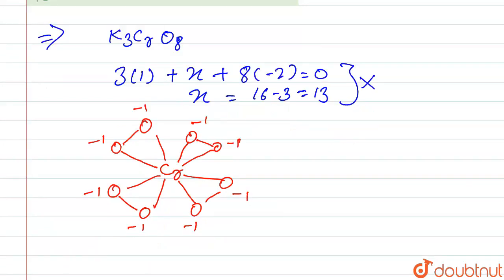So K₃CrO₈, now we calculate the accurate oxidation number. Here 3×1, it is x, and 8×(-1) because peroxide has -1 oxidation state. So it is x minus 5 is equal to 0.